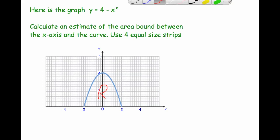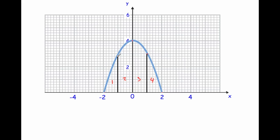Our first example: here's a graph of y = 4 − x². The question says calculate an estimate for the area bounded between the x-axis and the curve, marked as region R, using four equal-size strips. Since the graph goes from −2 to 2, we split it into four regions by drawing vertical lines at −1, 0, and 1, giving us regions one, two, three, and four.